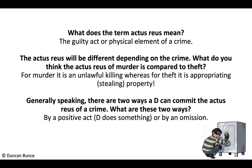The actus reus is the guilty act or physical element of a crime. It differs depending on the offense — for murder it's the unlawful killing of a reasonable creature in being under the King's Peace, whereas for theft the defendant appropriates property belonging to another. The actus reus changes with each crime.